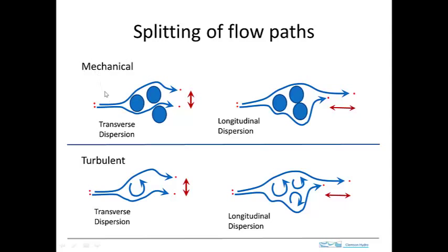In a turbulent flow in an open fluid, we don't have solid pieces but we do have vortices. We can have transverse dispersion caused by these vortices — the flow lines go around the vortices, but the flow may also participate in the vortices. We could also get longitudinal dispersion as a result of this. So we have spreading both transversely and longitudinally. The rate at which this happens is related to the rate of flow or the rate of circulation in these vortices, and the extent also depends on the scale and size of these structures.